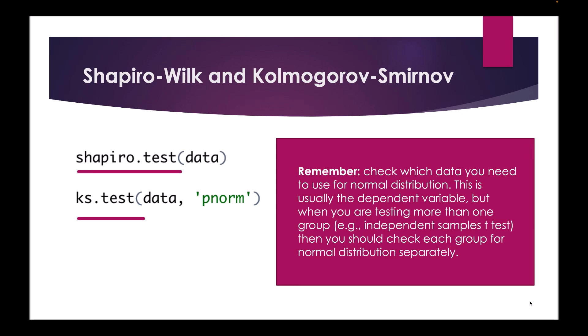When checking data for normal distribution, you need to check the relevant data — usually the dependent variable. When testing more than one group, for example in an independent samples t-test, you should check each group for normal distribution separately.